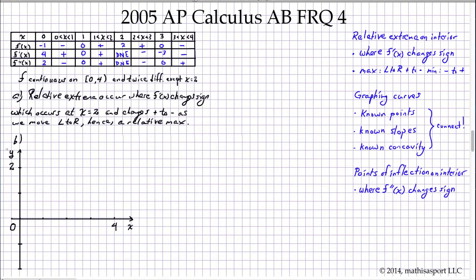We can be a little nervous at first because there's a lot of uncharted territory. But proceeding in order — from known points to known slopes to known concavity and then connecting up the information — that's the safe route. We'll start with the known point (0, -1), then the known point (1, 0), the known point (2, 2), and the known point (3, 0). And then nothing beyond that.